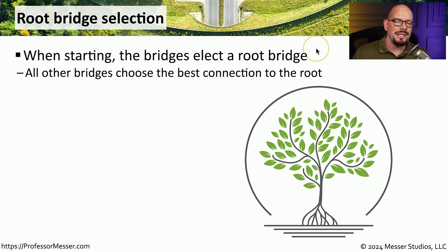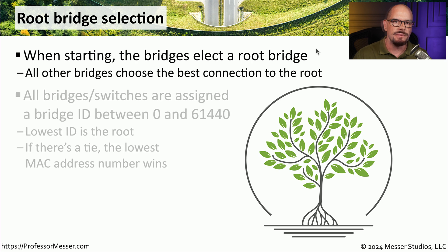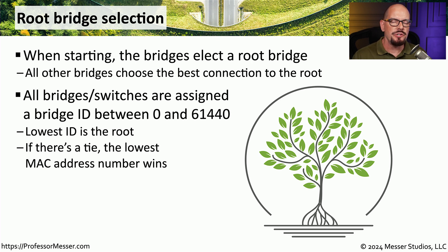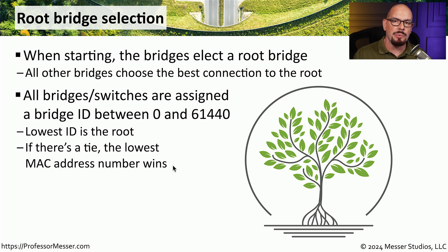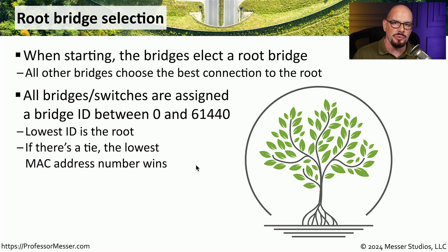Spanning Tree relies on the concept of a root bridge. This root bridge is elected when the network is first started — all bridges participate in the election and choose the best connection to communicate back to that root bridge. You can manually configure which bridge to use as the root bridge by setting its bridge ID to a low value. Bridge IDs can be set between 0 and 61,440, and the one with the lowest bridge ID becomes the root bridge. If multiple switches share the same bridge ID, the switch with the lowest MAC address becomes the root bridge.